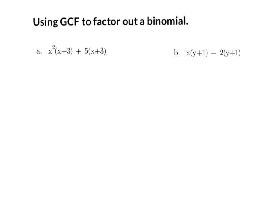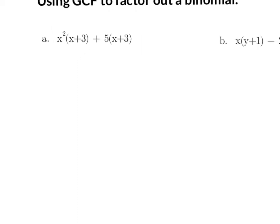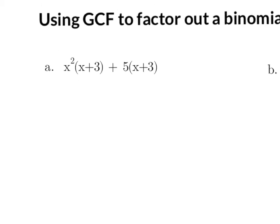Let's talk about extending the concept of greatest common factor. Not only can the greatest common factor be a number or a number with variables, but you can also use it as a common expression. For example a, we want to pretend that this here is one term and this is another term. What they have in common is they both have an x plus 3. So we can factor that out. I want to put my common factor — my greatest common factor — on the outside.